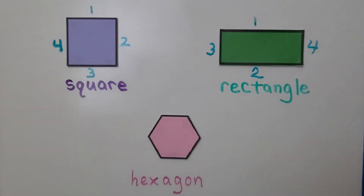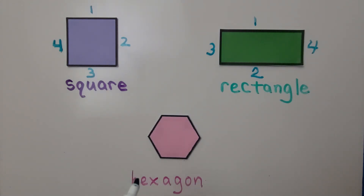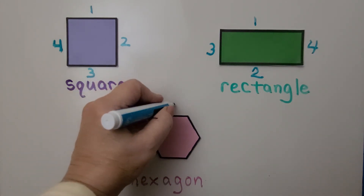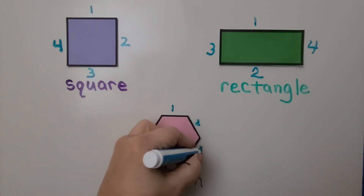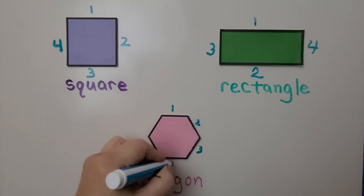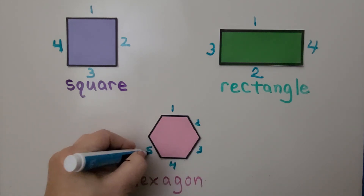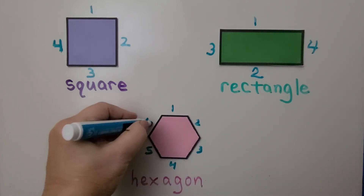Here we have a hexagon. H-E-X-A-G-O-N. Hexagon. A hexagon has six sides: one, two, three, four, five, six sides.